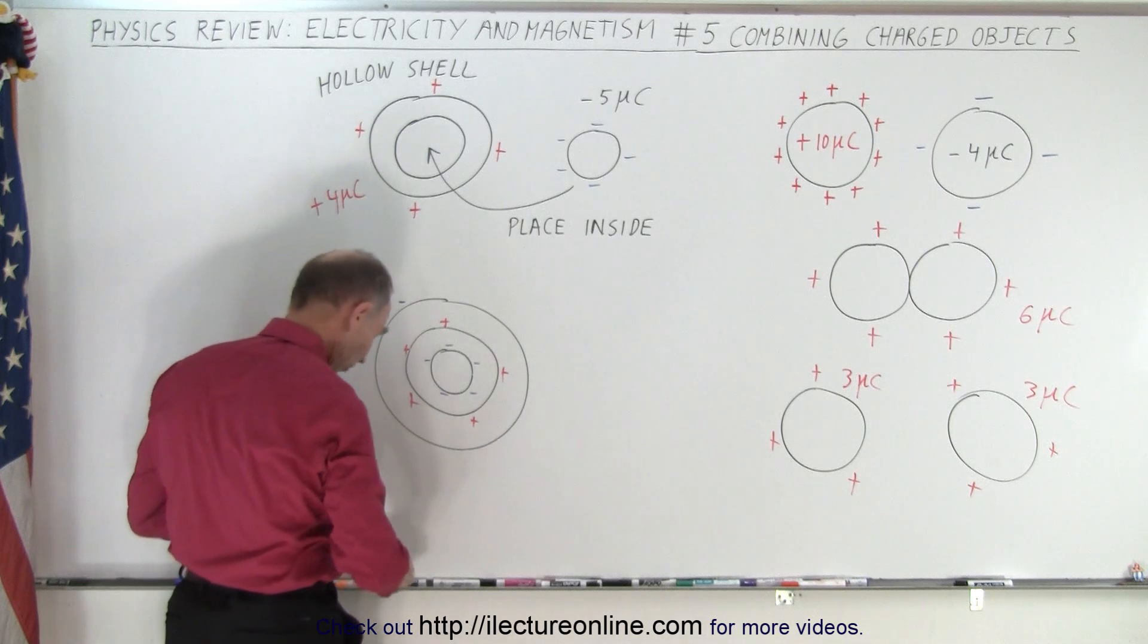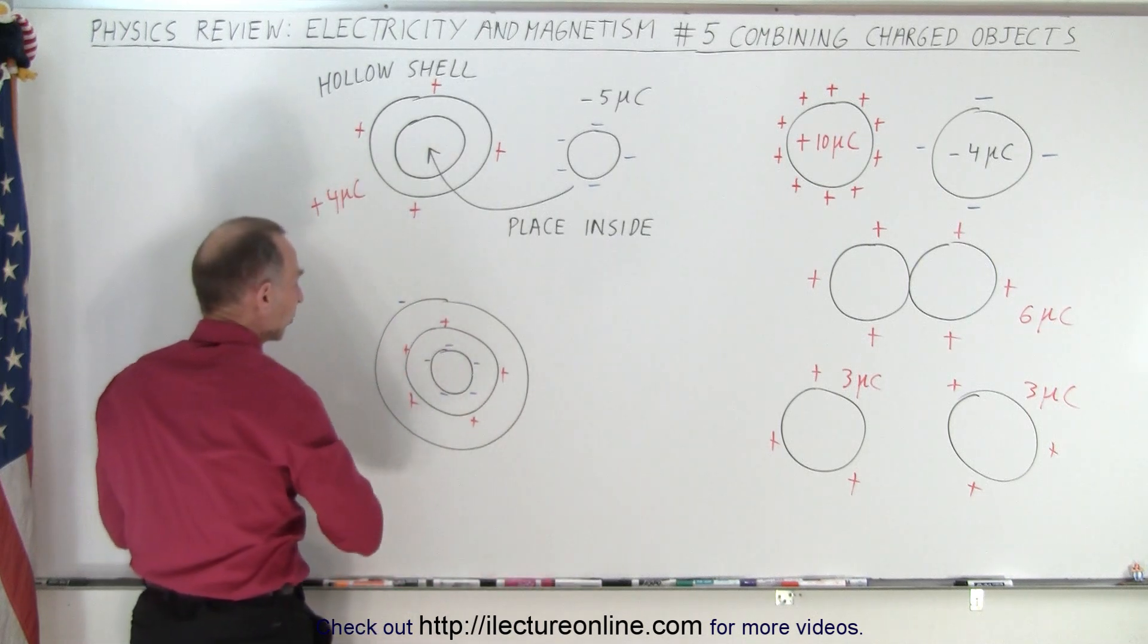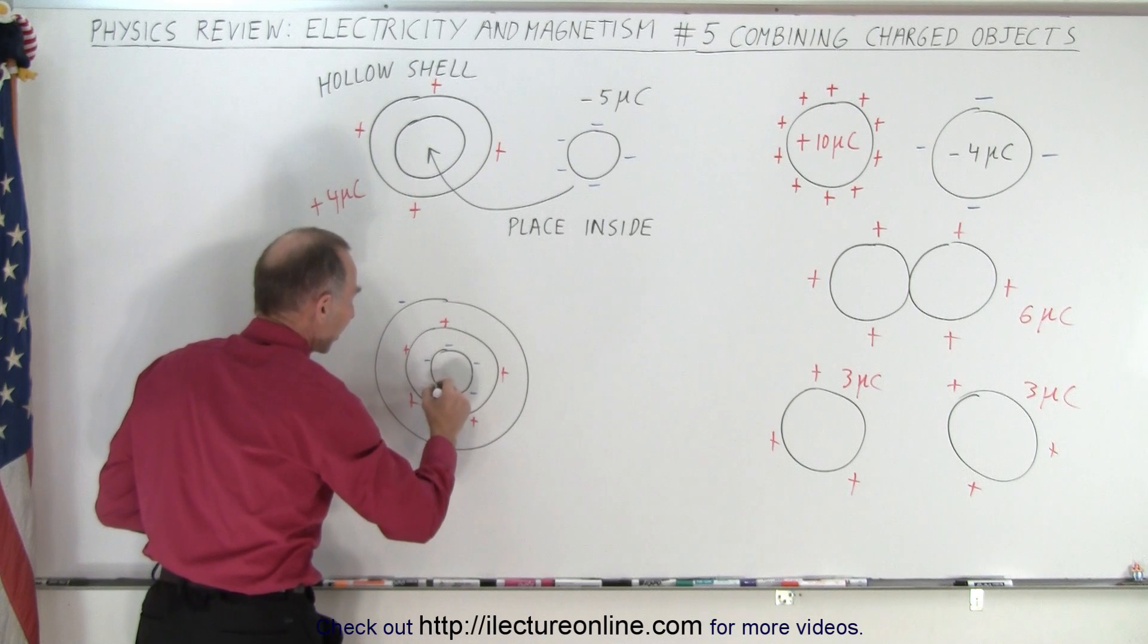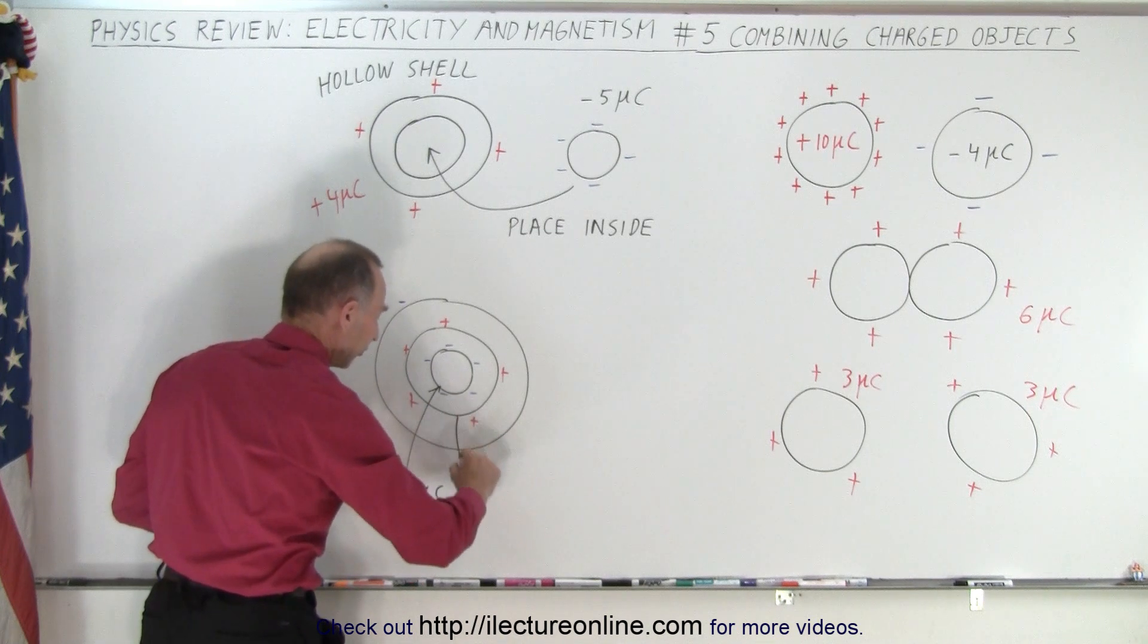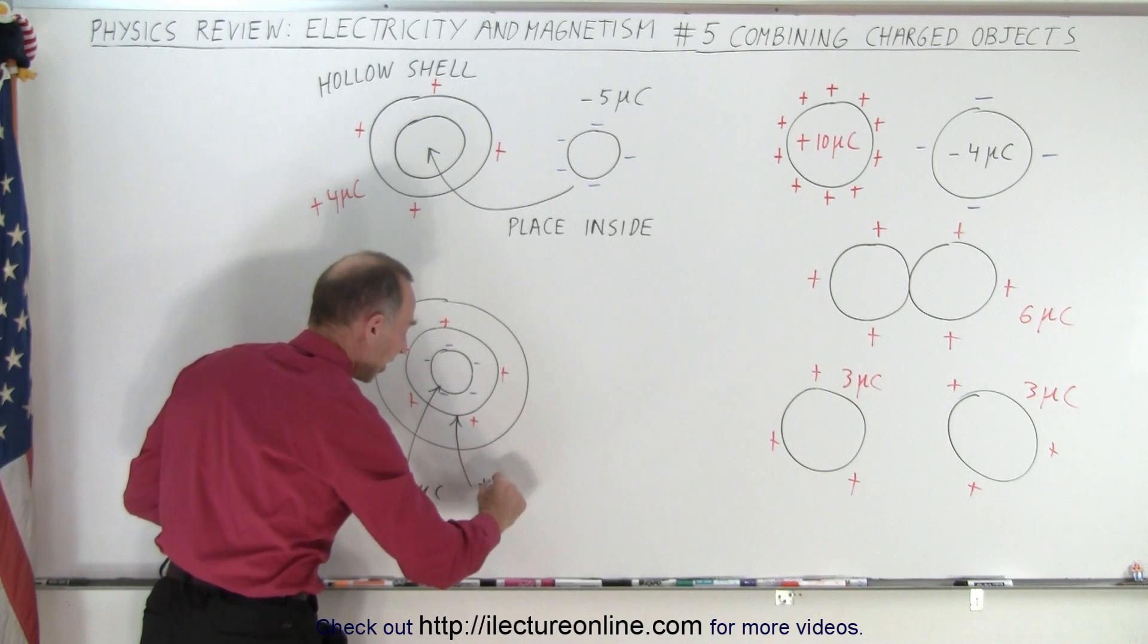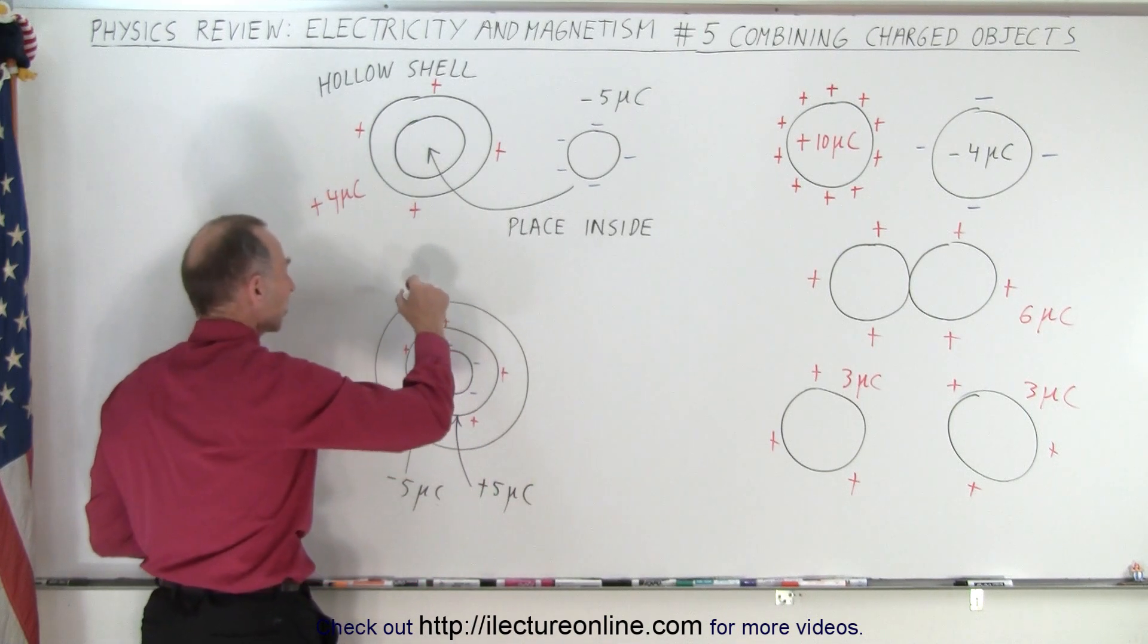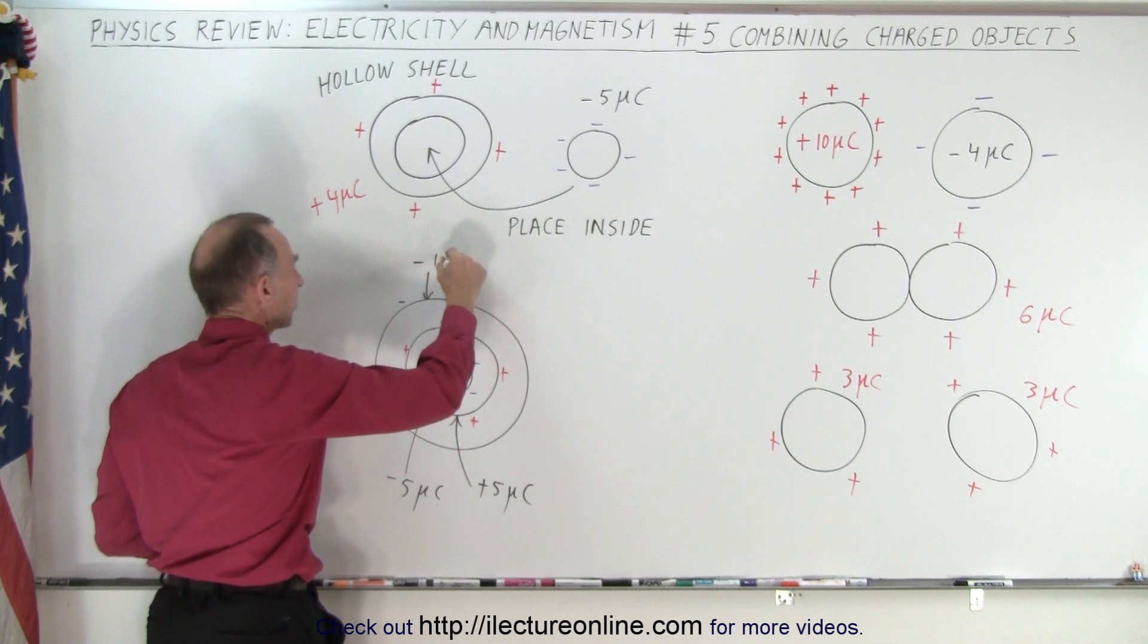And so what happens is you'll have on the very inner surface, let me grab my pen here, so on this surface you'll have a minus five micro coulombs. Let me draw an arrow, so this is minus five micro coulombs. So on this surface you'll have a plus five micro coulombs, and on the outside surface here we have a minus one micro coulomb.